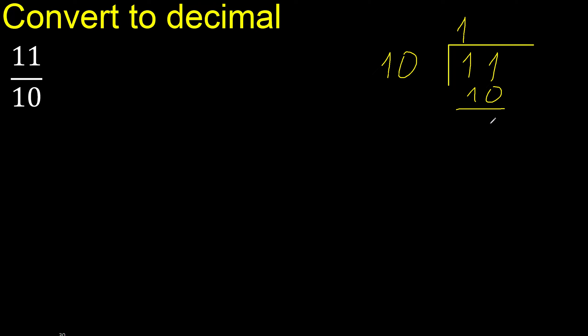11 minus 10 is 1. There is no number that goes down, therefore complete — always complete with 0. Place the decimal point here. 10.